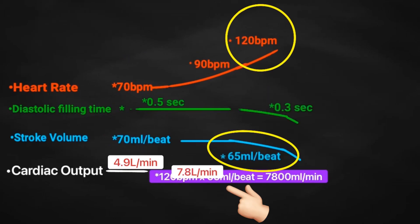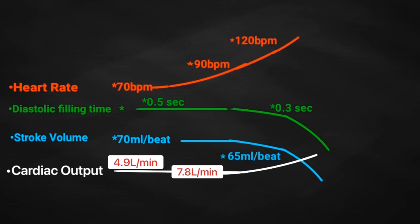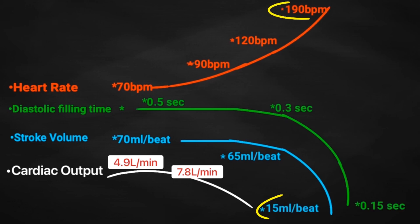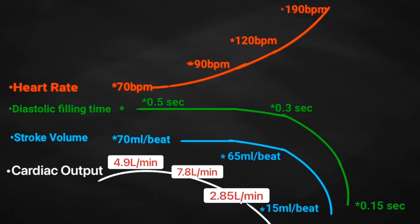However, as heart rate continues to increase, stroke volume gradually decreases due to decreased filling time. Cardiac output will initially stabilize as the increasing heart rate compensates for the decreasing stroke volume. But at very high rates, cardiac output will eventually decrease as increasing rates are no longer able to compensate for the decreasing stroke volume.